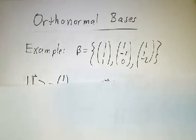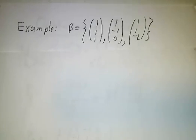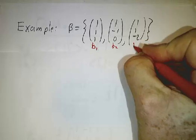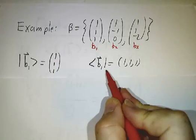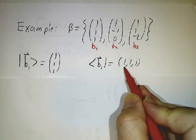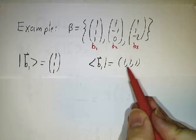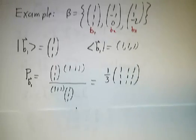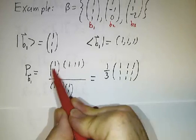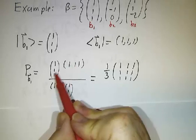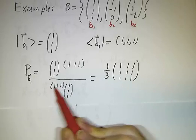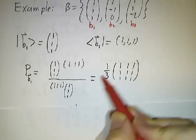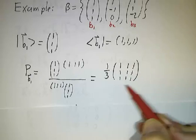In our example with basis b1, b2, b3: taking just b1, as a ket it's the column vector (1,1,1), and as a bra it's the transpose conjugate — here just the row (1,1,1) since these are real numbers. The projection operator is the column times the row, a 3×1 times a 1×3, giving the 3×3 matrix of all ones. Divided by ⟨b1|b1⟩ = 3, we get one-third of that matrix. That is the projection operator onto b1.